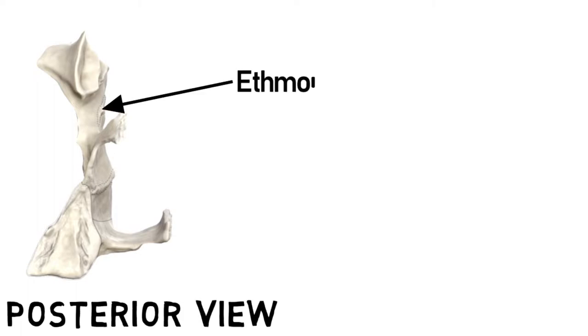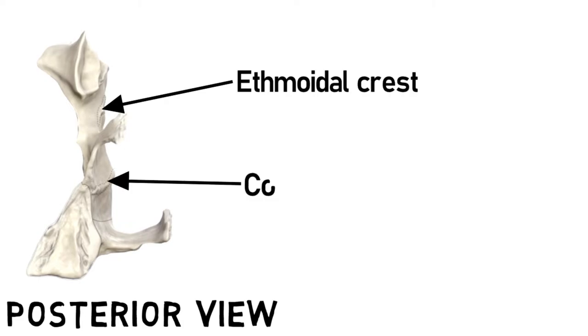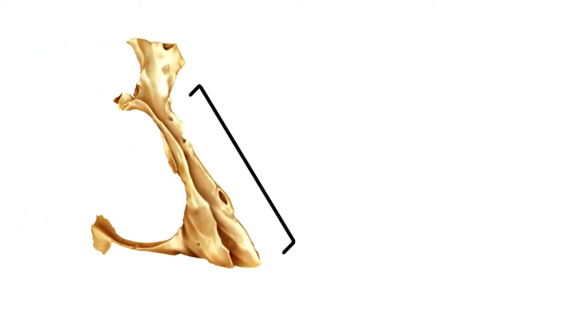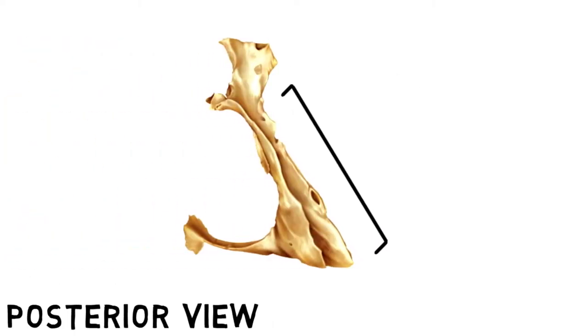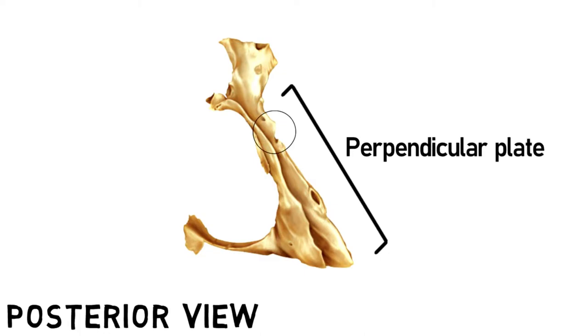This is the posterior view of the bone. As you can see, this crest is the ethmoidal crest, and this crest below it is the conchal crest for the inferior nasal concha. This again is the posterior view of the bone with a slightly different angle. This is the perpendicular plate, and this is the greater palatine groove on the lateral surface.